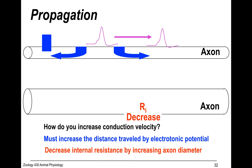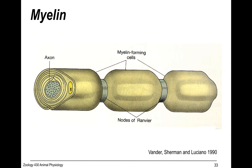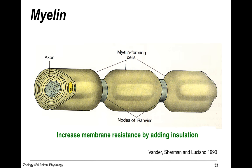We can decrease internal resistance by increasing the axon diameter — making it fatter makes it easier for the electrical signal to travel. You can also accomplish increased conduction velocity by increasing external resistance, and the famous example is myelin. Myelin is electrically neutral — it's like wrapping electrical wires with tape — so it increases the membrane resistance by adding insulation.